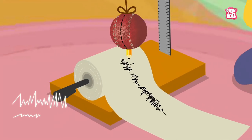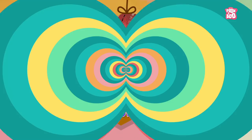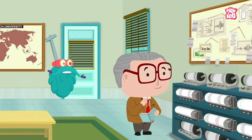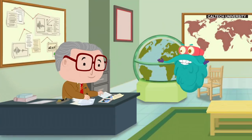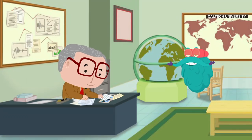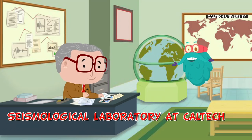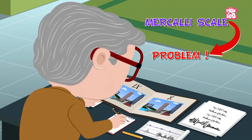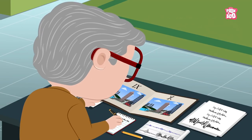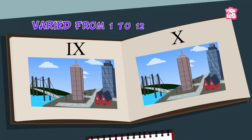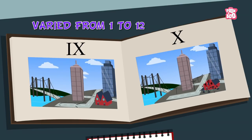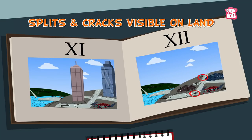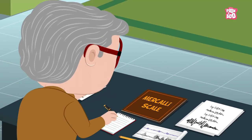The bigger waves show more movement than the smaller ones. This man is Dr. Charles Francis Richter. He is a theoretical physicist who was recently asked to work at the Seismological Laboratory at Caltech. Richter spotted a problem with the Mercalli scale, which people of the early 1900s used to measure the intensity of an earthquake. The Mercalli scale varied from 1 to 12, with level 12 being the highest, when splits and cracks were visible on land. Richter found it to be too subjective.